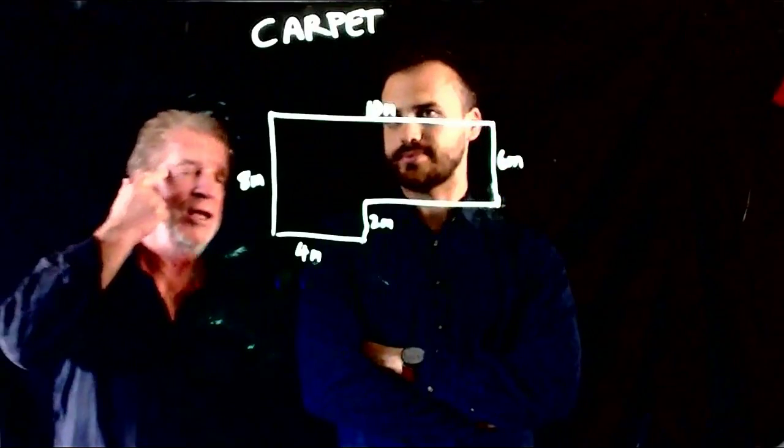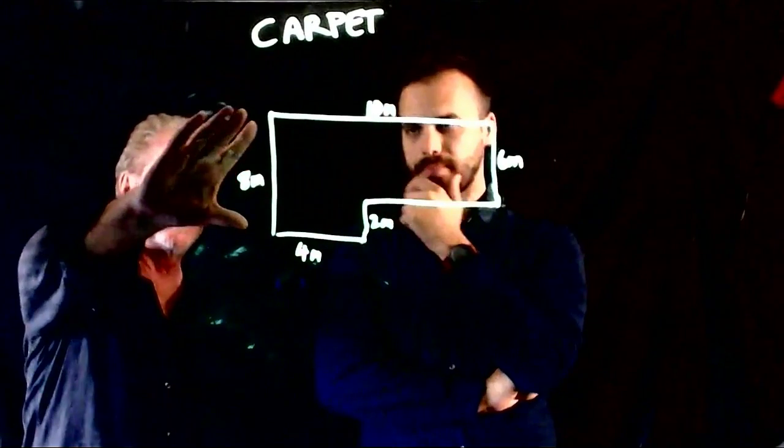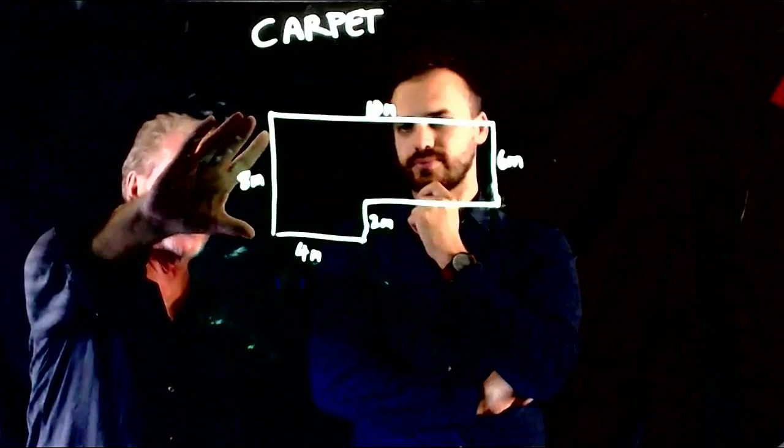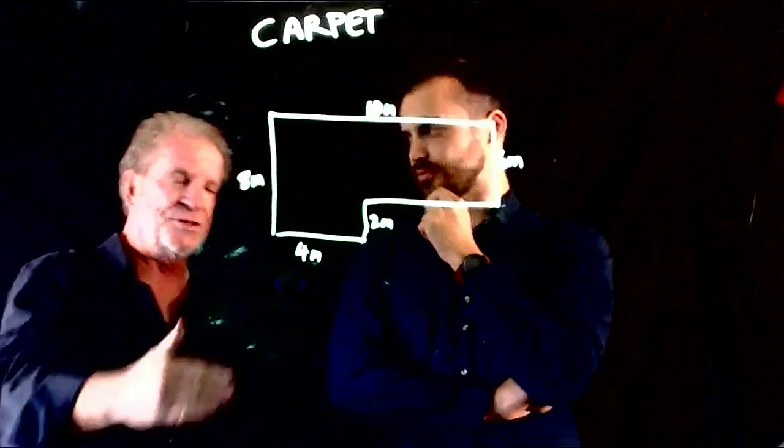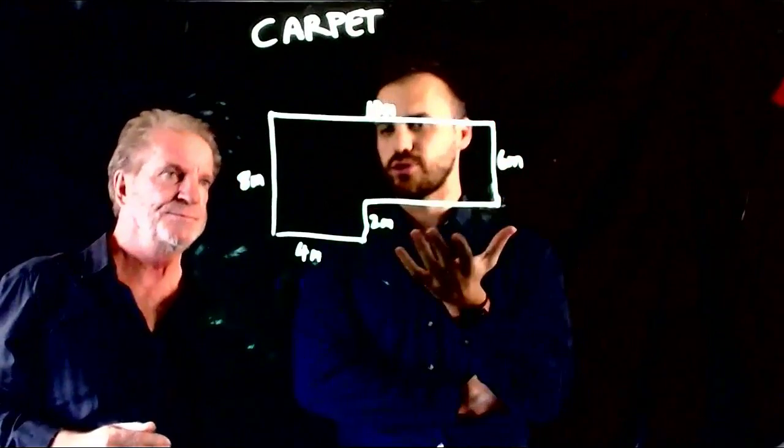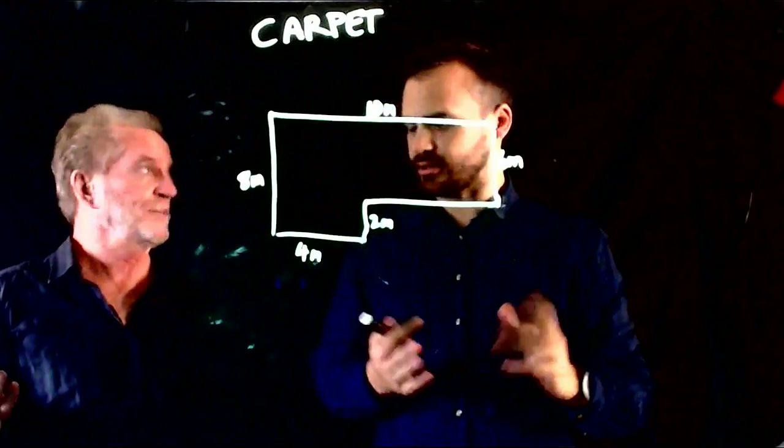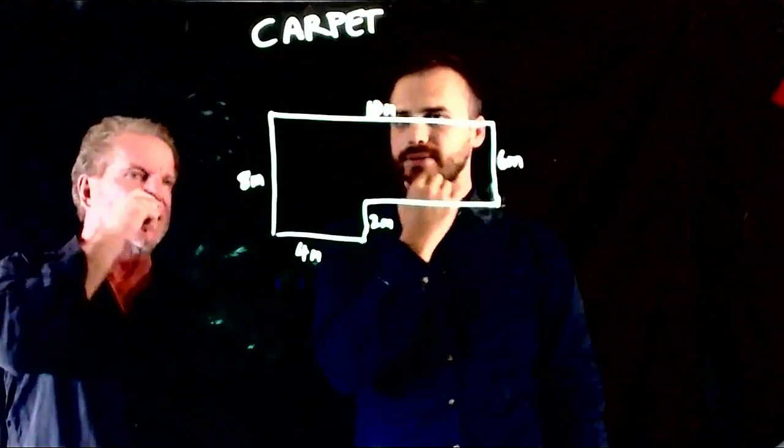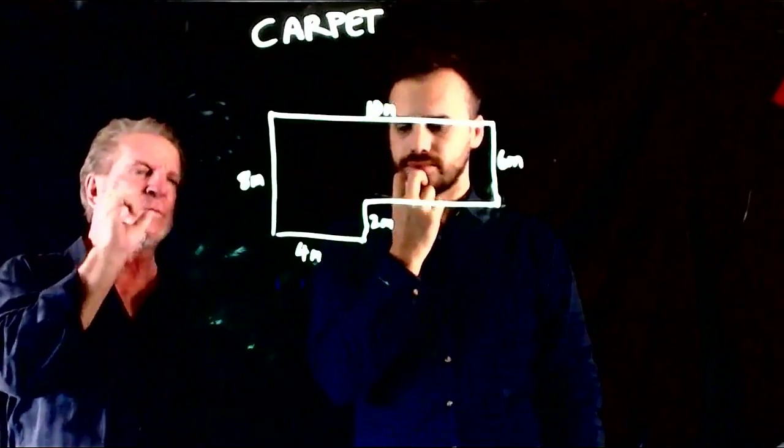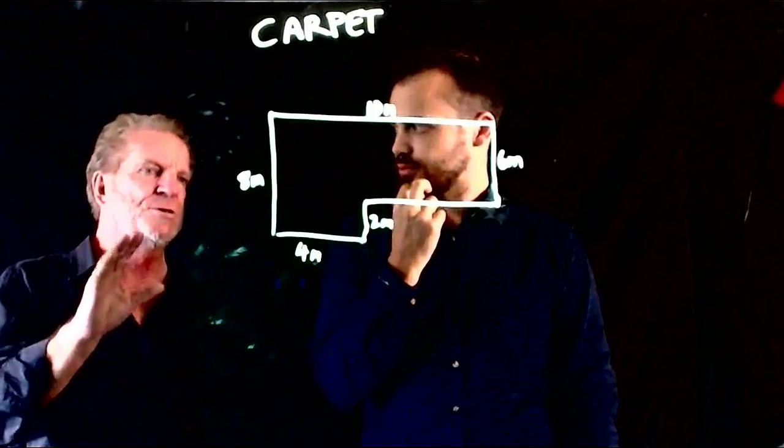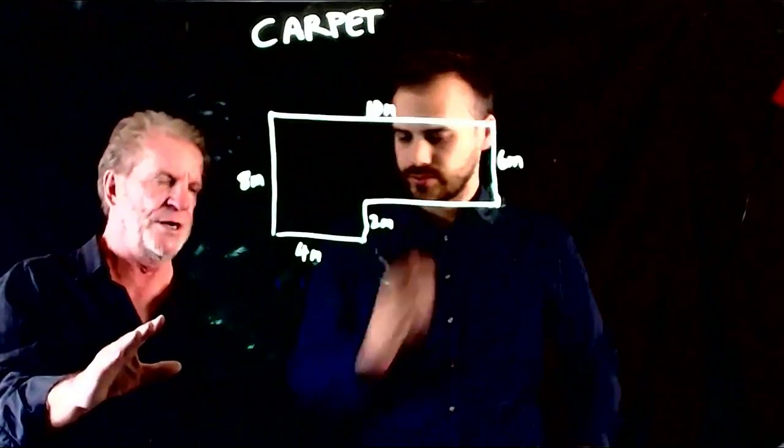John, how about we finish off with a composite floor shape like an L-shape? Sometimes your room isn't rectangular. Remember, we still need to determine the number of strips we're going to need because we need to figure out the total length of carpet we're going to buy.